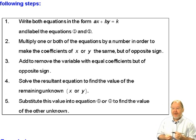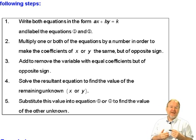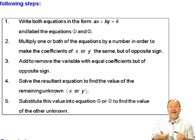The first step is you write both equations in the form ax plus by equals k, and then you label them as equation 1 and equation 2.